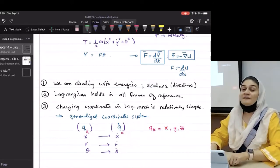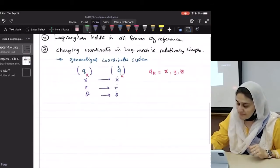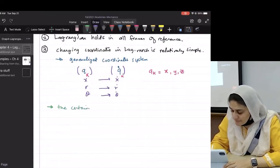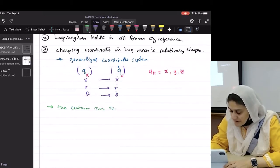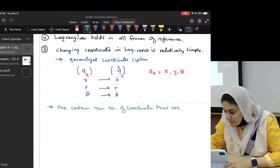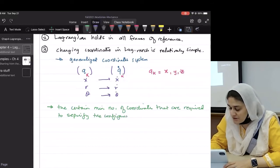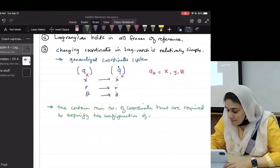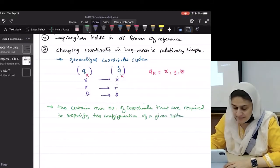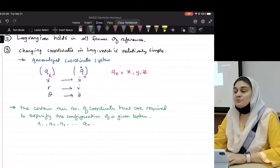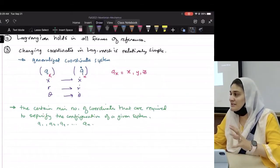Official definition of a generalized coordinate system, write this down, is the certain minimum number of coordinates that are required to specify the configuration of a given system. So usually you call them Q1, Q2, Q3, and so on up till QN if your system requires N coordinate systems or N configurations.